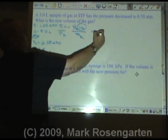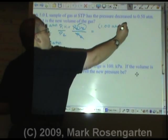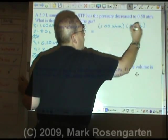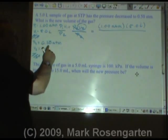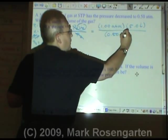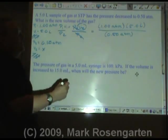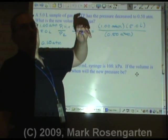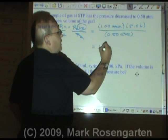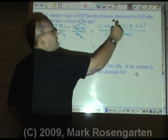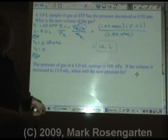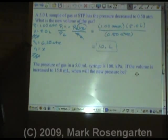So we plug it in. Our initial pressure is 1.00 atmospheres, our volume 1 is 5.0 liters, over our second pressure of 0.50 atm. Atmospheres cancel and leave us with liters. So we have 1 times 5, which is 5, divided by 0.5. This equals 10.0 liters. Two sig figs in our final answer. And that makes sense, because if our pressure gets cut in half, then our volume should double, because it's an indirect relationship.